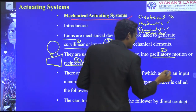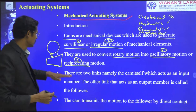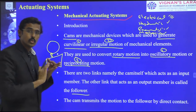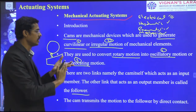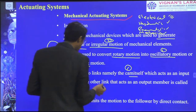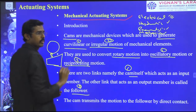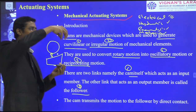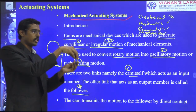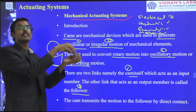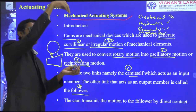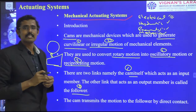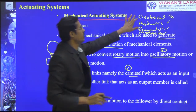There are two links: the CAM itself, which acts as an input member, and the other link that acts as an output member, called a follower. The CAM profile rotates — the round component is going to rotate — and we keep the follower in contact on top. When the CAM rotates, depending upon its design, the follower may oscillate or reciprocate. We use this for mechatronic systems to make various actuating functions.